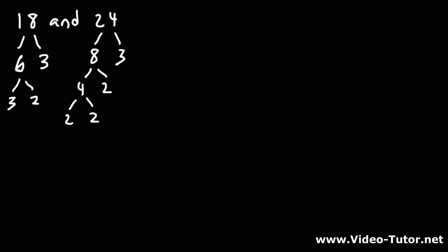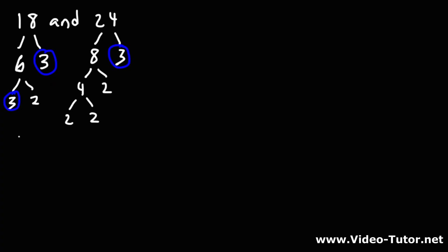Notice that 18 has 2 factors of 3, while 24 has 1 factor of 3. So we're going to write the lowest of these two numbers — 1 factor of 3. 18 has 1 factor of 2, while 24 has 3 factors of 2, so we pick the lower number — 1 factor of 2. Thus, the GCF of 18 and 24 is 6. That's how you can find the greatest common factor using prime factorization.